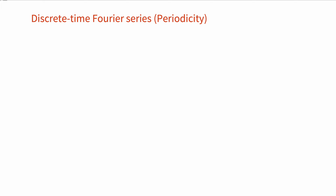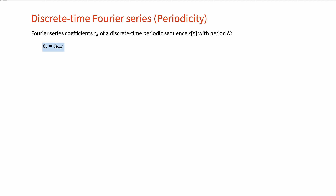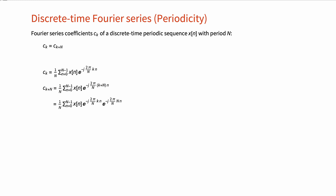There are strong similarities between properties of discrete time and continuous time Fourier series. However, a very important distinguishing feature of the discrete time Fourier series is their periodicity. The Fourier series coefficients c_k of a discrete time periodic sequence x[n] with period N are also periodic in frequency with period N. To prove this, we substitute k+N for k in the analysis formula, then break down the exponential term and simplify, showing that the result equals c_k.